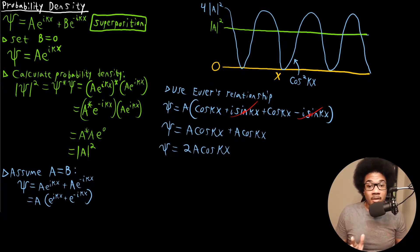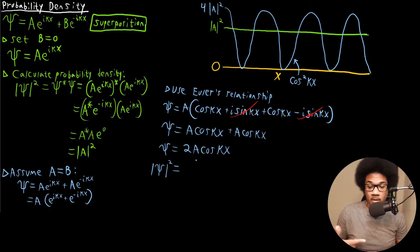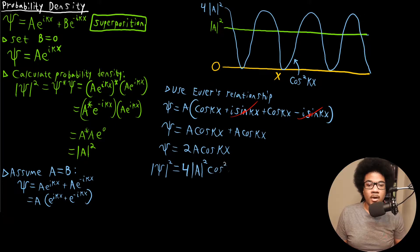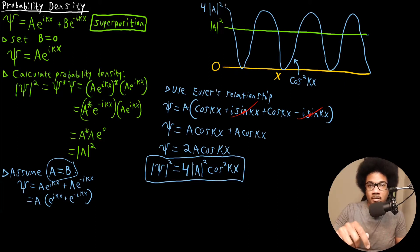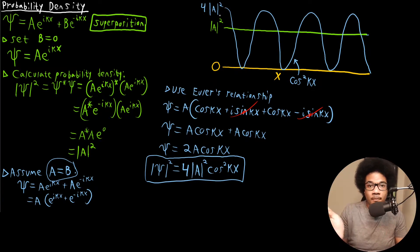To calculate the probability density, we take the square of this wave function. Since there are no imaginary components, we simply multiply to get 4 times the square modulus of A times cosine squared of kx. This is the probability density for the case where A and B are equal. I've plotted that here — it oscillates between 0 and 4A squared.